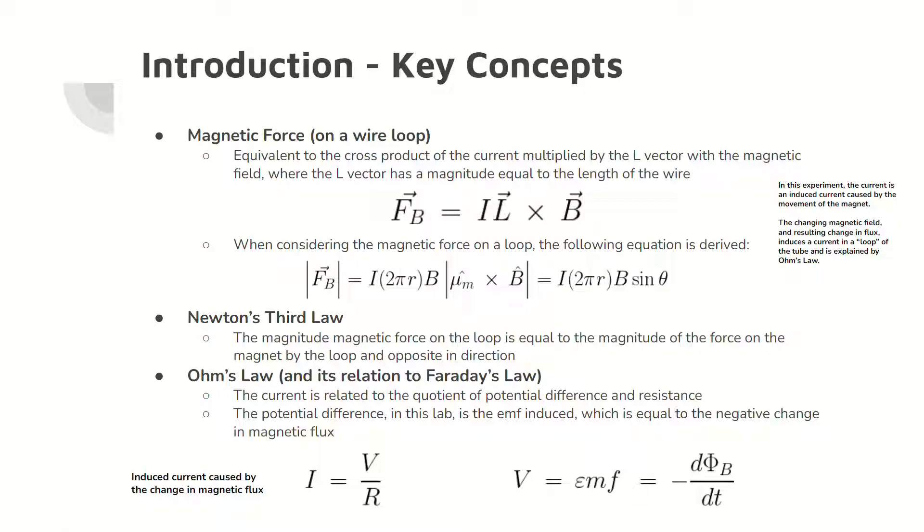Two other concepts are Newton's third law and Ohm's law. Newton's third law in this lab states that the magnetic force on the loop is equal to the force on the magnet by the loop in terms of magnitude, but opposite in direction. Ohm's law relates the current with the potential difference in the resistance. Importantly, the negative change in magnetic flux equals the potential difference as an EMF.